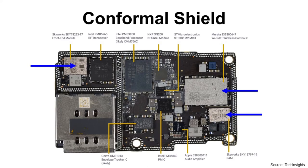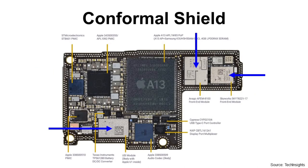Which devices use conformal shield and where can we find them? Here are some examples in Apple iPhone. Devices with blue arrows have conformal shield, and the color of conformal shield is silver gray. Those devices are front-end module, Wi-Fi module, and power amplifier module. Here are some more examples in the same Apple iPhone — front-end modules and ultra-wideband module.